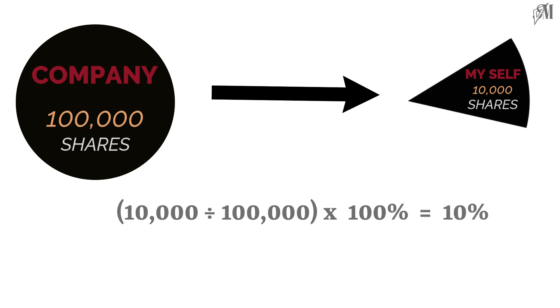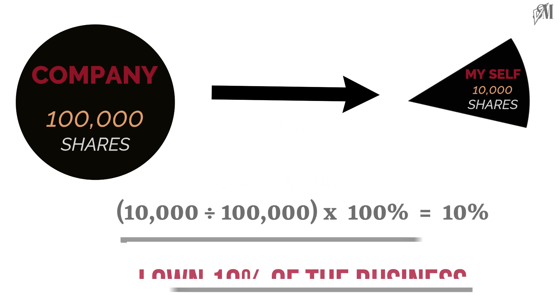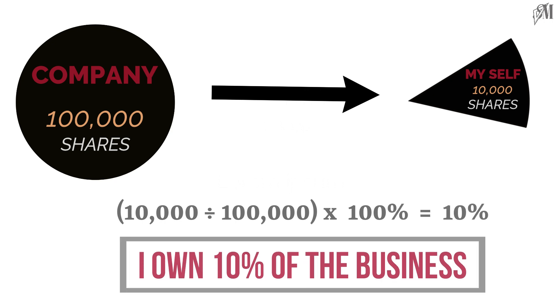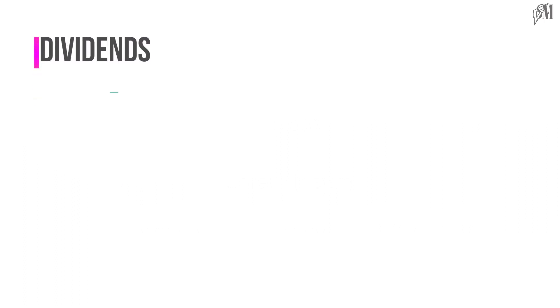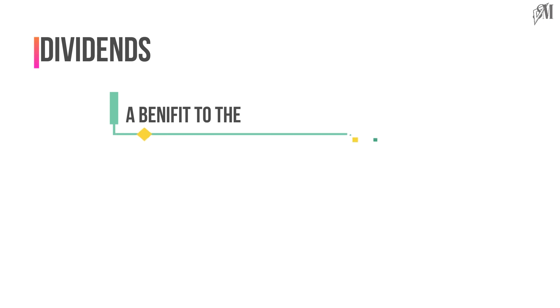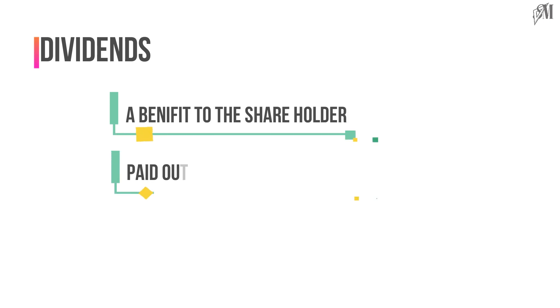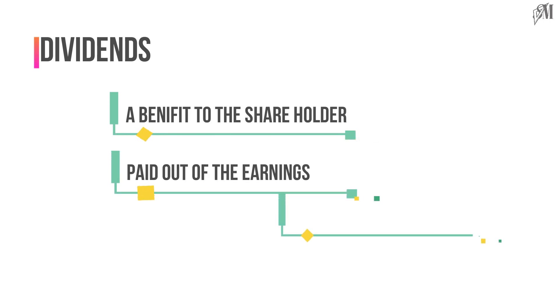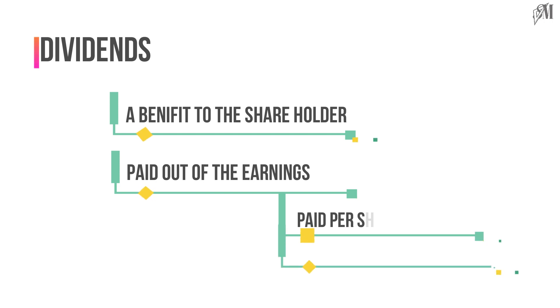That means I own 10% of the business. The next fact you should know about is dividends — it is a benefit to the shareholder. Dividends are payments out of the earnings of the company, and they are paid per share and given to the shareholder quarterly or annually.